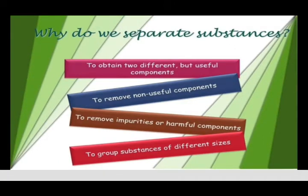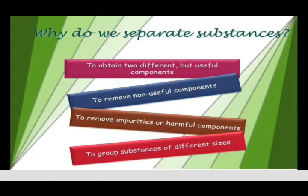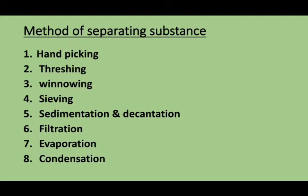Why do we separate substances? There are some reasons. First, to obtain two different but useful components — from a mixture, we separate useful substances. Second, to remove non-useful components — harmful substances are removed. Third, to remove impurities or harmful components from a mixture. Fourth, to group substances of different sizes — according to size, substances are separated into groups.